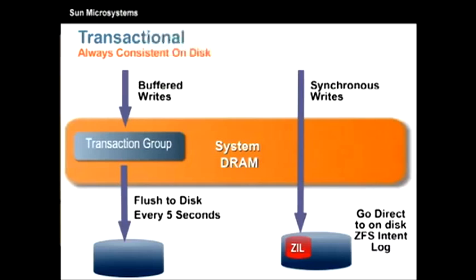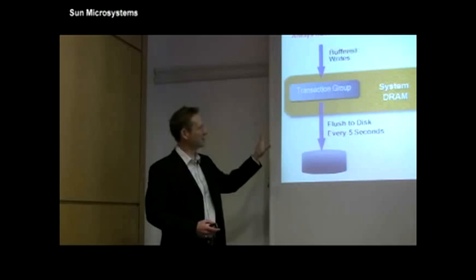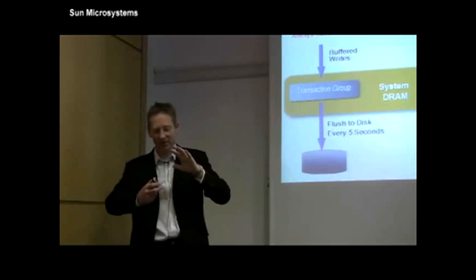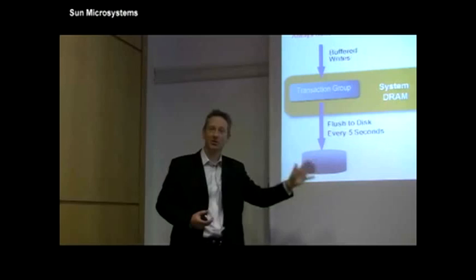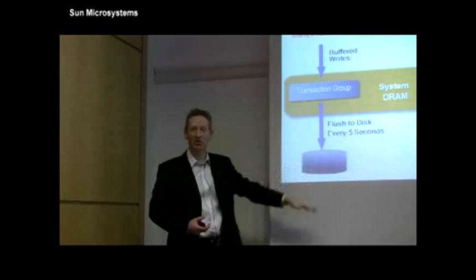So how do we maintain a consistent on-disk state? In ZFS and in all file systems we have two types of writes to consider, buffered writes and synchronous writes. Most writes are buffered. That means they get written into system memory, into a part of the memory used by the file system, and later written down to disk. With ZFS, the way we make sure we're consistent is that we gather the instructions that form changes to the file system into transaction groups. And we flush those through every five seconds. And this is an atomic operation.